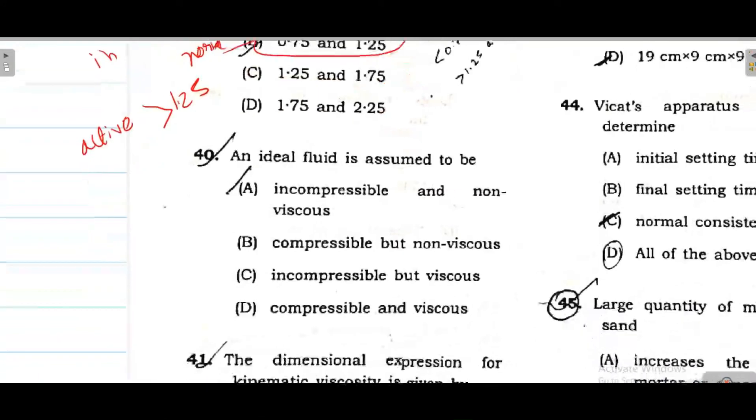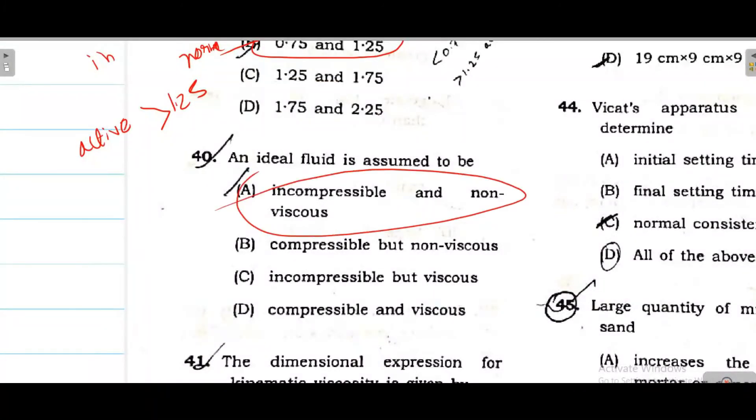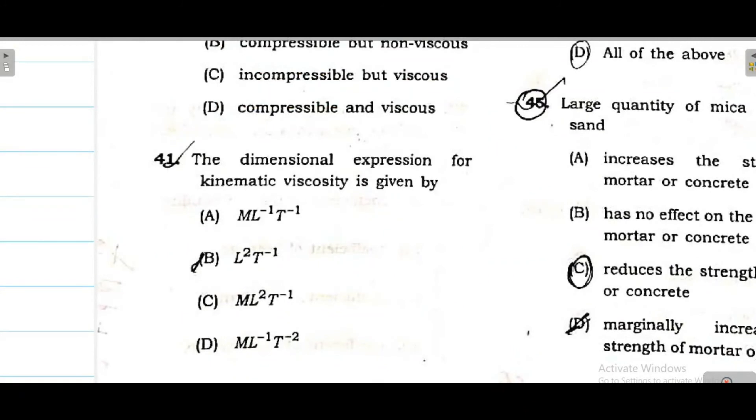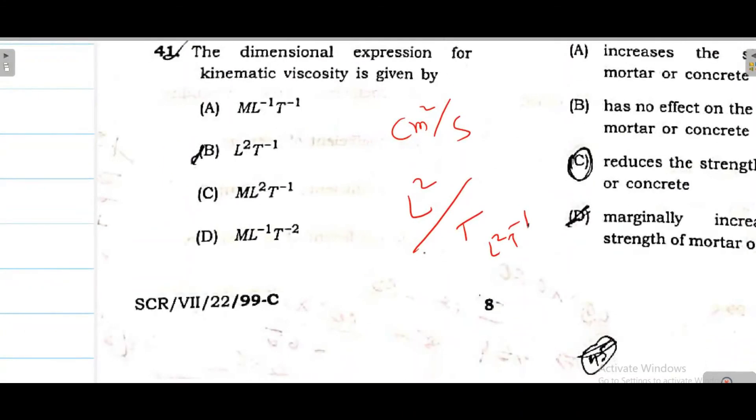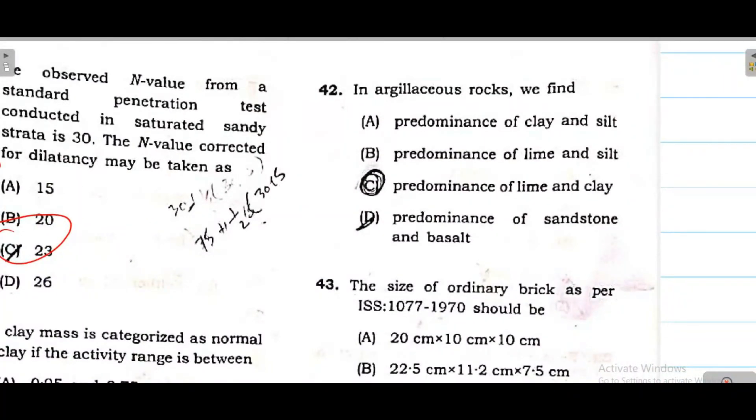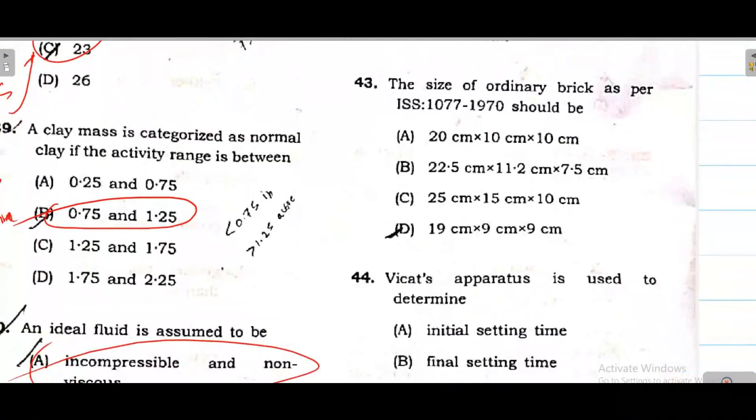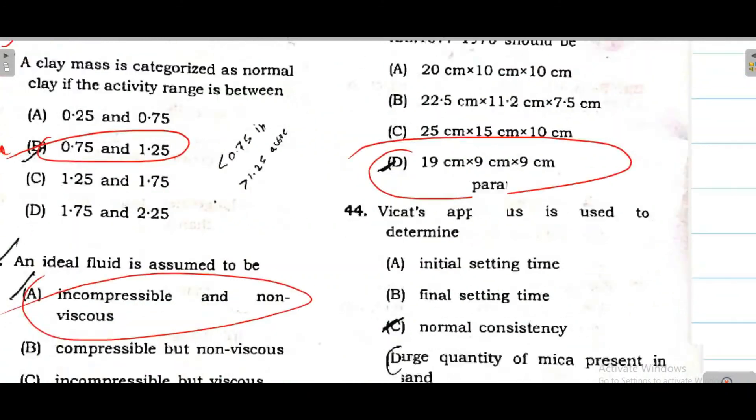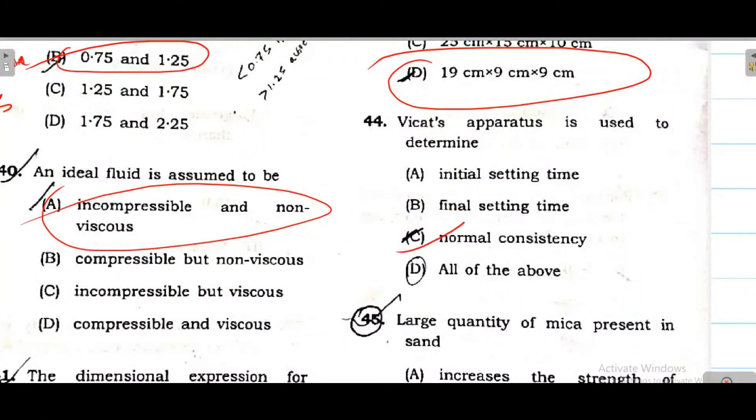Question 38. The observed N value from a standard penetration test conducted in saturated sandy soil - N is 30. The N value corrected - the formula is 15 plus half into N minus 15. So here 15 plus half into 30 minus 15, which is 15 by 2 equals 7.5. 15 plus 7.5, ultimately you will get 22.5. Round off, 23 is the answer. Next question 39 - a clay categorized as normal clay if the activity range is between 0.75 and 1.25, then we can say normal. Below 0.75, inactive. Above 1.25, active. Next, ideal fluid - incompressible and non-viscous. Then dimensional expression of kinematic viscosity - centimeter square per second. Centimeter square means L square, second means T. So L square T inverse 1. So option B is correct.